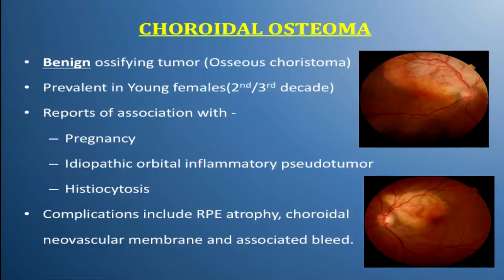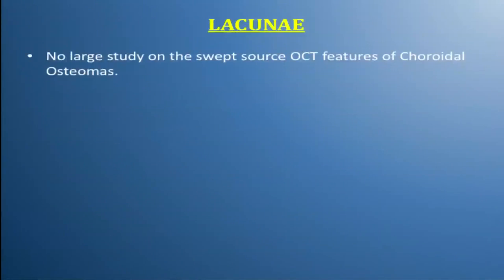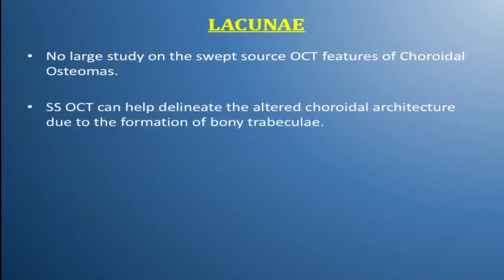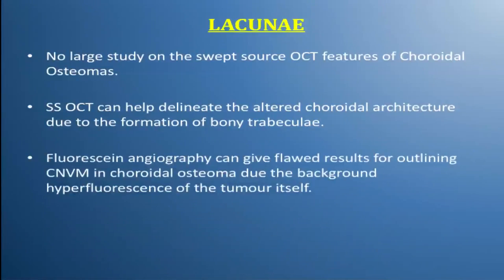Osteomas are benign ossifying tumors which are prevalent in young females, found to be associated with pregnancy, pseudotumor, and histiocytosis. These can get complicated with RPE atrophy and choroidal neovascular membrane. There was no large-scale study on the swept source OCT features of choroidal osteomas, as swept source can help elucidate the altered choroidal architecture by the tumor. Also, conventional fluorescein angiography can give flawed results in outlining CNVM due to the inherent hyperfluorescence of the tumor itself.